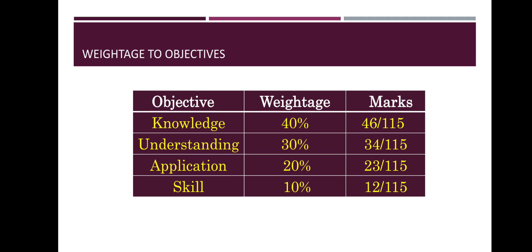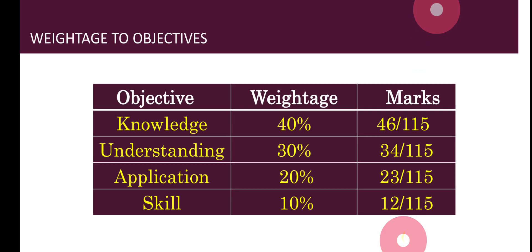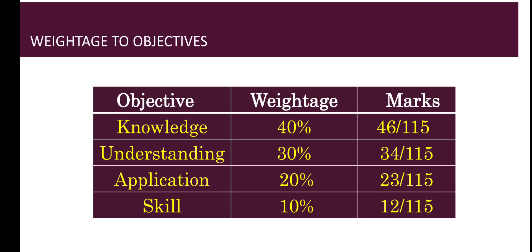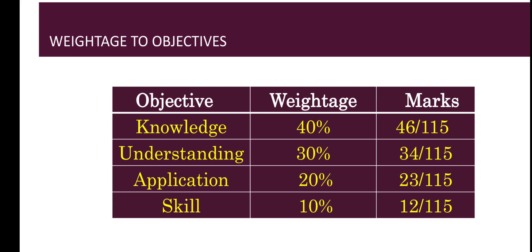After the weightage of marks, this is the weightage of objectives. You will be having a question paper of 115 marks this year, out of which you have to score 70. Out of 115 marks, 40% of questions will be knowledge-based, 30% will be understanding, 20% application, and 10% skill.